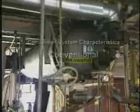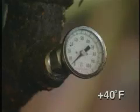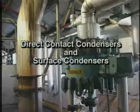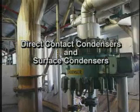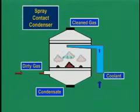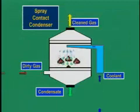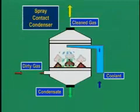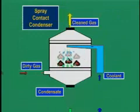Conventional systems are relatively simple devices that usually use air or water to reduce the gas stream temperature to as low as about 40 degrees Fahrenheit. Temperatures as low as 0 degrees Fahrenheit can be achieved using brine coolants. There are two categories of conventional systems: direct contact condensers and surface condensers. Direct contact condensers are essentially wet scrubbing equipment like spray towers or tray towers that directly contact the gas stream with a chilled liquid, usually water.